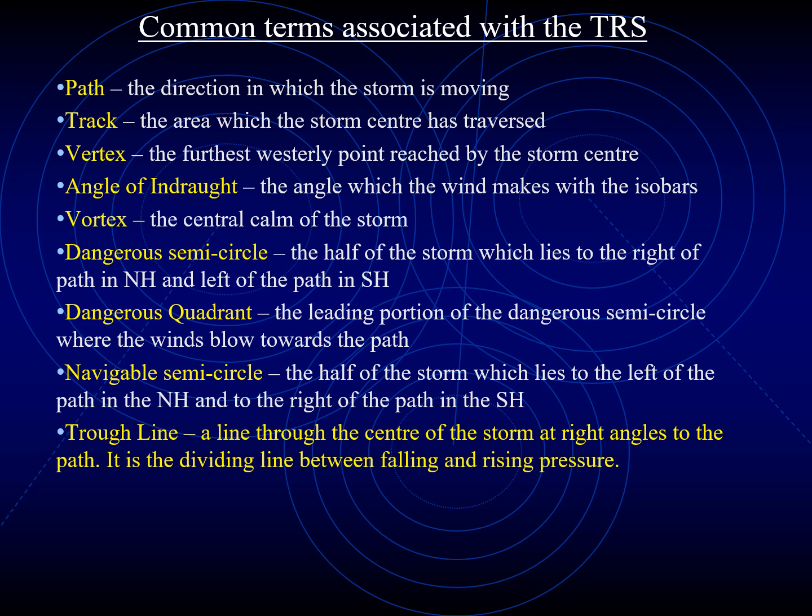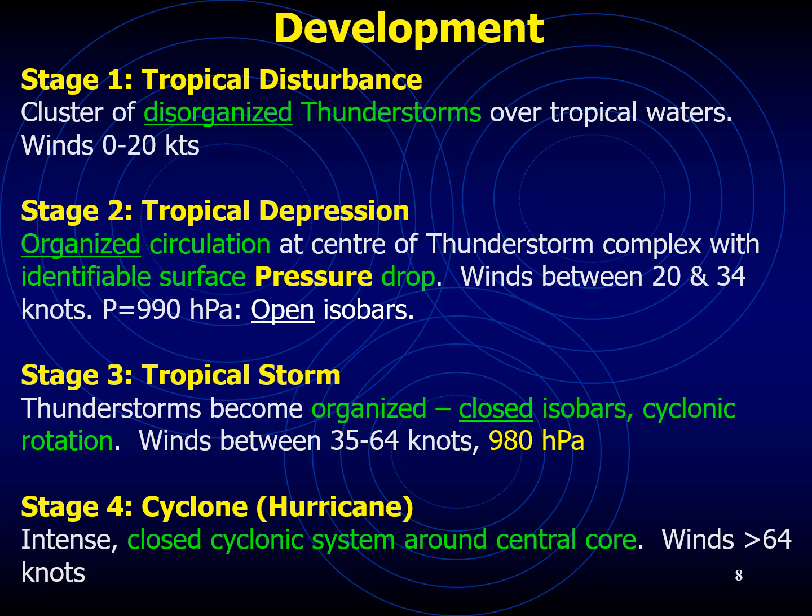Finally, we have the trough line, which is a line through the center of the storm at right angles to its path, and it is the dividing line between falling and rising pressure. I will show you some of these terms in a diagram later. In terms of organization or development of a tropical cyclone, you have to remember that in the tropics — the region about 23.5 degrees north and south of the equator — the weather is much different from the middle latitudes.